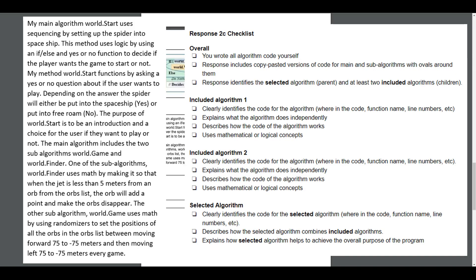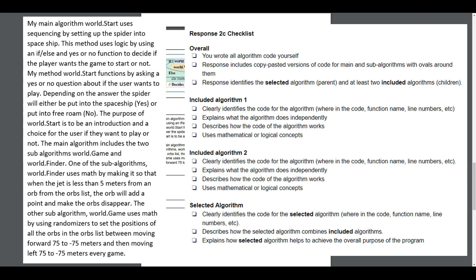For the written part: the student probably should have stated they wrote the algorithm themselves — it's not clearly stated here. They didn't get points taken off for that, but you always want to be safe. The response included a copy-pasted version of the code for the main and sub-algorithms with ovals around each — yes, we just looked at that. The response identifies the selected parent algorithm and at least two included algorithms — the student could have done a better job labeling them one and two. Included algorithm one should clearly identify the code for the algorithm. They do describe what each does, but they don't point to specific ones clearly enough — better to be safe.